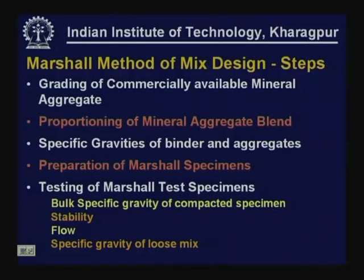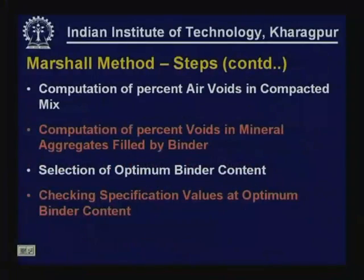Marshall specimens are made by adding aggregates and bitumen together and compacting them. These specimens are tested for bulk specific gravity of the compacted mix, stability, and flow. We also determine the specific gravity of the loose mix, which gives GMM — the maximum specific gravity of the loose mix. Using this information, we calculate air void content in the compacted mix, percentage voids in the mineral aggregate filled by binder, and other volumetric parameters. All this information is used to select the optimum binder content.